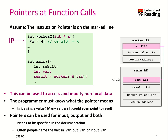Now, what happens if we use pointers? We change our code slightly to worker2 and use another variable called var in main. In this case, let's look at the activation record of main. We have this additional variable var — this integer object on the stack. Now worker2 takes as an argument a pointer to an integer. So instead of putting a particular value, we put the address of variable var as the argument. If var is stored in main memory at location 4712, this memory address gets assigned to the variable x when the function is called.